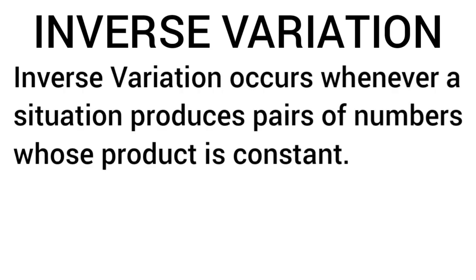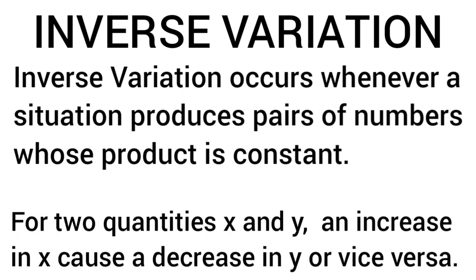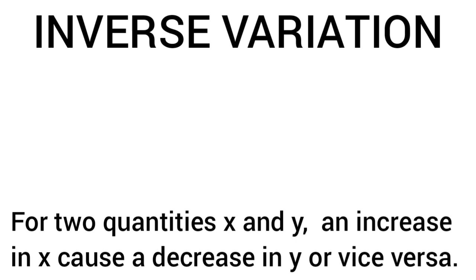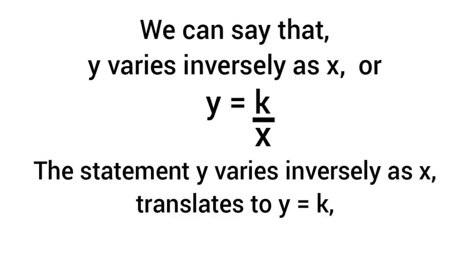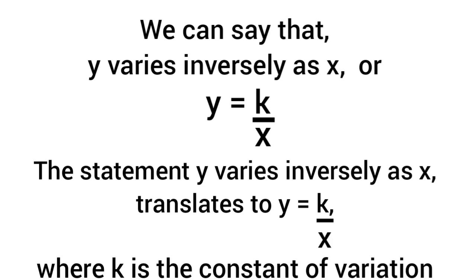Inverse variation occurs whenever a situation produces pairs of numbers whose product is constant. For two quantities x and y, an increase in x causes a decrease in y, or vice versa. We can say that y varies inversely as x, or y equals k over x. The statement 'y varies inversely as x' translates to y equals k over x, where k is the constant of variation.